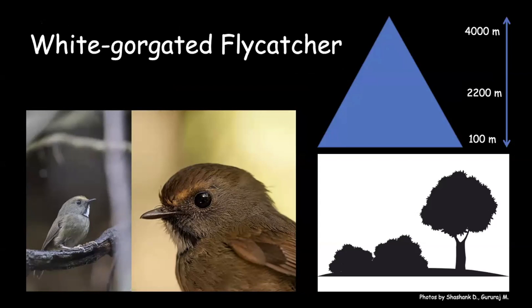The white-gorgeted flycatcher is one of my favorite birds, found mainly in undergrowth — you don't see them in treetops. It is extremely shy and very difficult to see. The first time I saw this bird, it took me about 40–45 minutes just to see it, partly because in 2004 there were no recordings of these birds. It was one of the first flycatchers I got to see in Eagle Nest, which was a lot of fun.